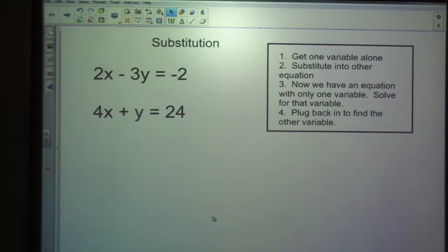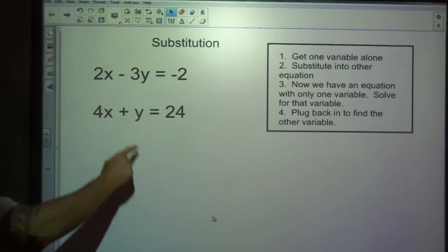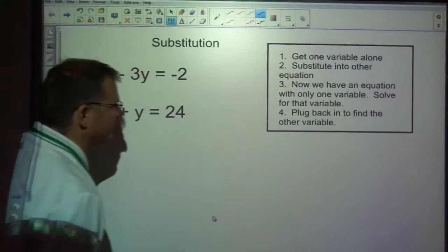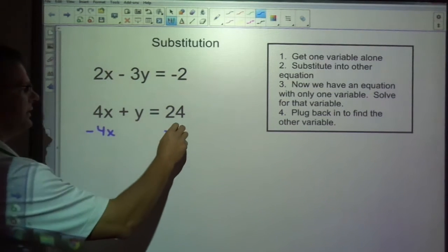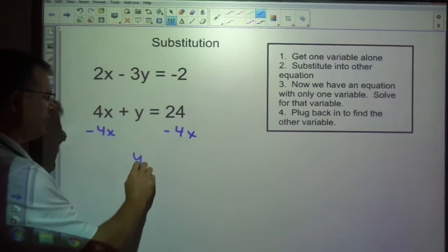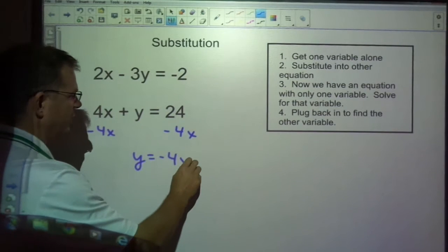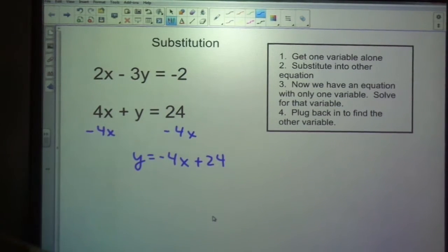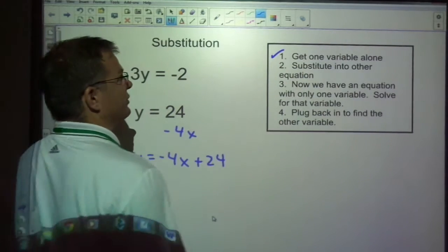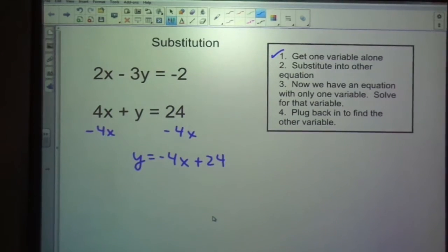So the first thing is to get one variable alone. It doesn't matter which one. This x or this y or this x or this y, whichever looks easiest. In this case, this y is the easiest thing to get by itself because there's nothing attached to it. All I would have to do is subtract the 4x and I have y equals negative 4x plus 24. And now I have one variable alone. So that is my first step.